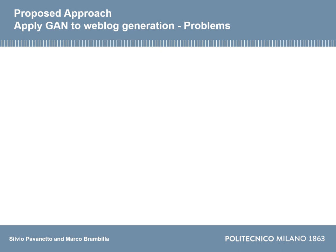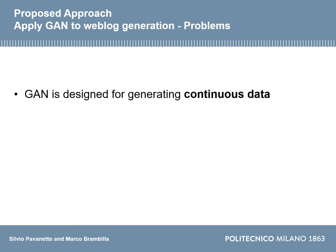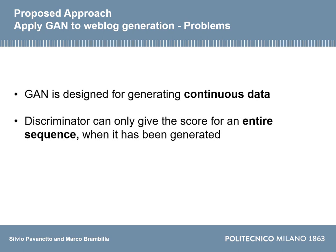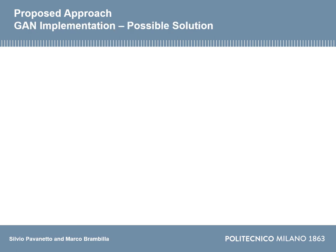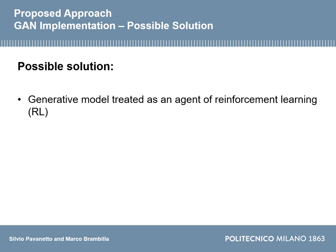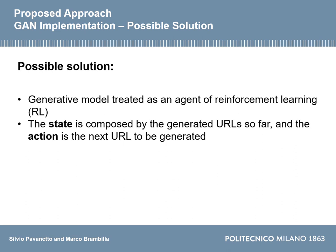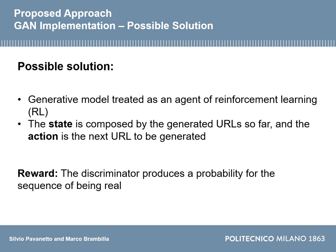The problems we encountered in applying GANs to log generation are: first, this type of network is designed for generating continuous data, while we have discrete data. Second, the discriminator can only give a score for an entire sequence once it has been generated, whereas we need a score for every single URL generated in the sequence. A possible solution is to treat the generative model as a reinforcement learning agent, where the state is the sequence of URLs generated so far, the action is the next URL to generate, and the reward is the probability that the discriminator assigns to the sequence being real.